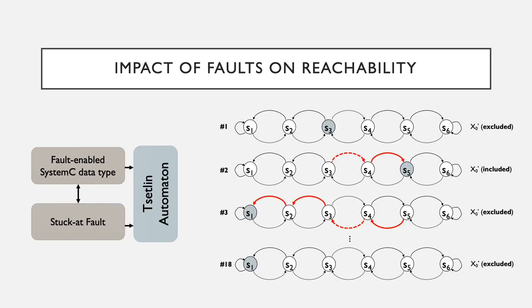Next, let's study the impact of reachability when faults are present. Faults are natural in systems — they can happen due to human errors, hardware manifestations, or fabrication issues. To study faults in our experiments, we used a SystemC-oriented simulation where original SystemC types were replaced by new fault-enabled SystemC data types with special annotations indicating whether a fault is present or not. Using that programming model, we designed the two-input XOR example of the Tsetlin automaton, and then injected a fault in a particular Tsetlin automaton called TA0.